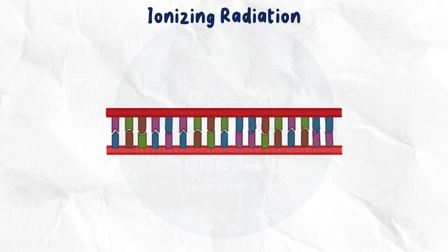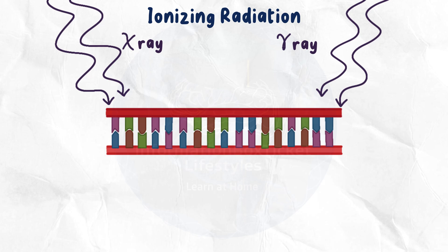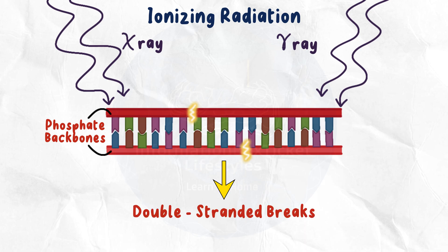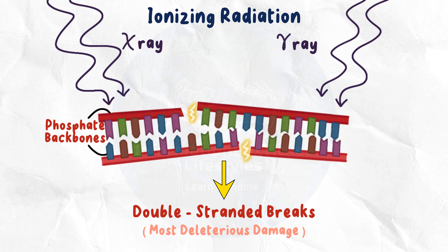Ionizing radiation, such as X-rays and gamma rays, can damage the phosphate backbones of both DNA strands, generating double-strand breaks — the most severe form of DNA damage. Double-stranded DNA breaks are generally not clean, meaning either end of the broken DNA has a single-stranded area that overhangs the remainder of the double-stranded DNA, like the jagged break when you snap a pencil with your hands.